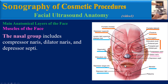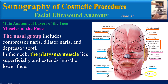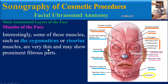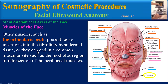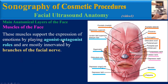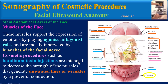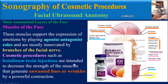The platysma muscle lies superficially and extends into the lower face. Interestingly, some of these muscles — such as zygomaticus or risorius — are very thin and may show prominent fibrous parts. Other muscles such as orbicularis oculi present loose insertions into the fibrofatty hypodermal tissue, or they can end in a common muscular site. These muscles support the expression of emotion by playing agonist-antagonist roles and are mostly innervated by branches of the facial nerve.